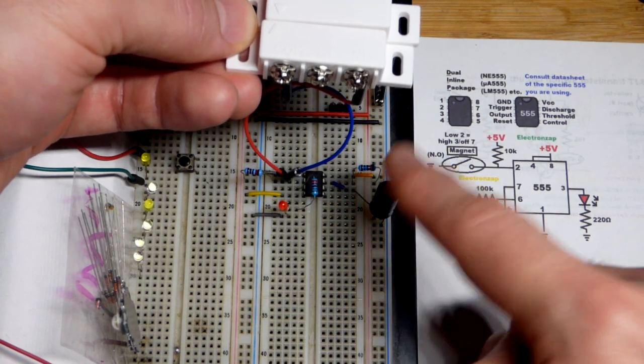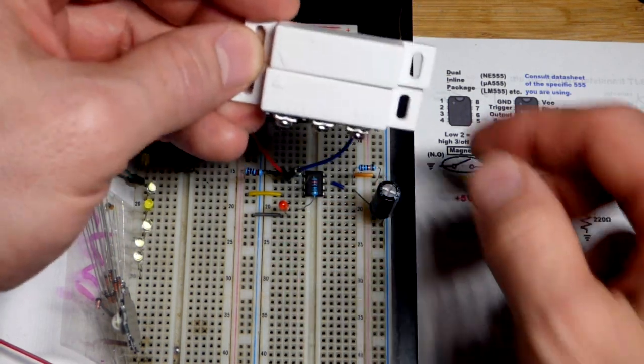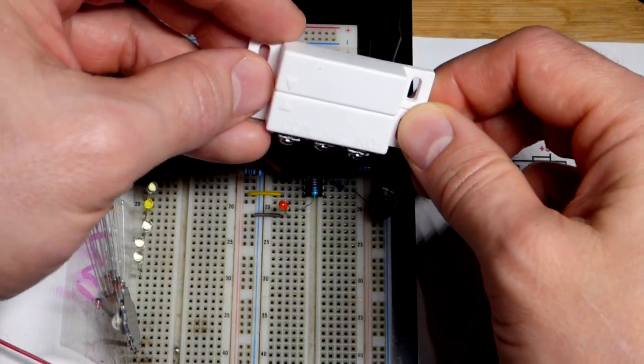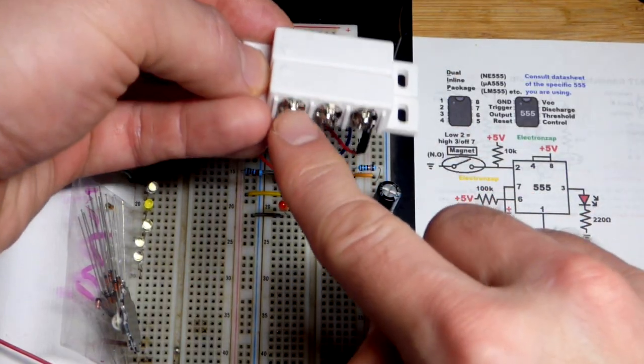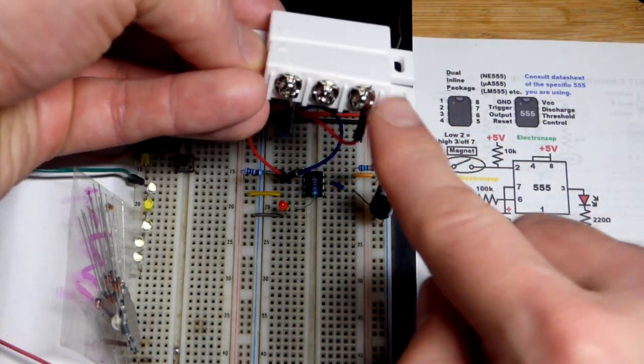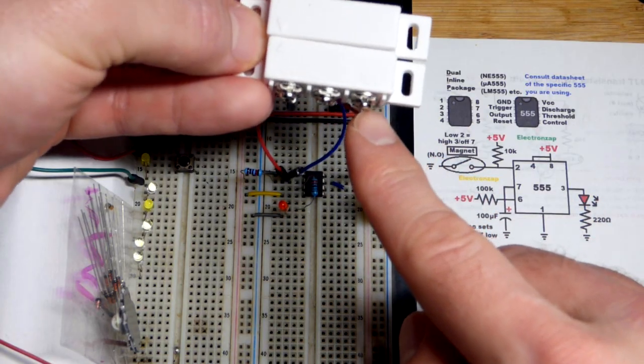Now we have a 555 timer wired in monostable mode. The output should be high for about 10 seconds once we trigger it. We have this magnetic reed switch wired in the normally open position right now.